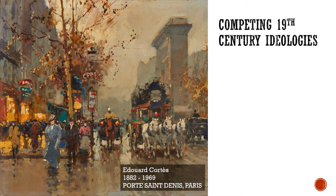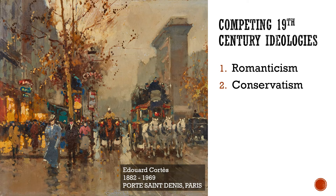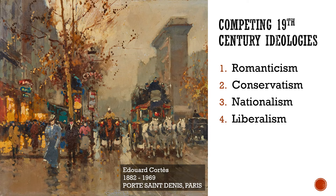The first two ideologies I'll be discussing are really a nostalgia for the past — they are Romanticism and Conservatism. Both of these ideologies harken back to the time before the French Revolution and before the Industrial Revolution. The next three ideologies are really a consequence of all these big changes: the French Revolution brought us nationalism, the Enlightenment brought us liberalism, and socialism is really a direct result of and answer to the Industrial Revolution and the living conditions it brought on. I'm going to talk briefly about each of these different ideologies and then we'll move into the Revolutions of 1848.